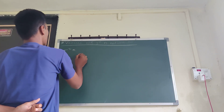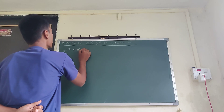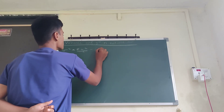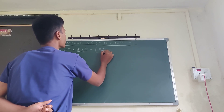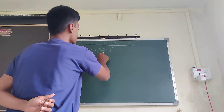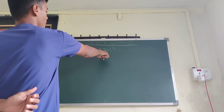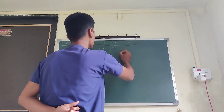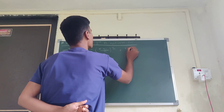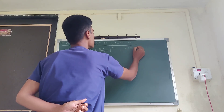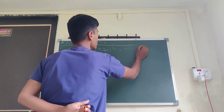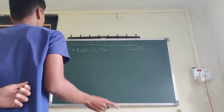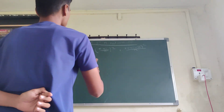The variance formula is: summation of xi squared upon n, minus the summation of xi upon n, the whole square. This term is also the mean formula. Another formula of variance is the summation of xi minus mean, the whole square, upon n.